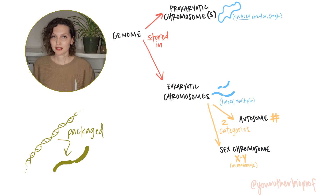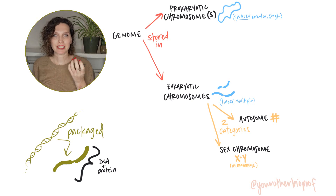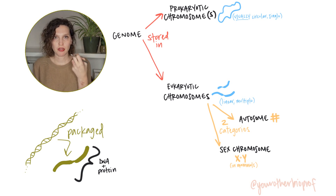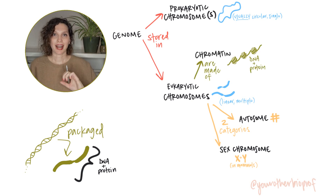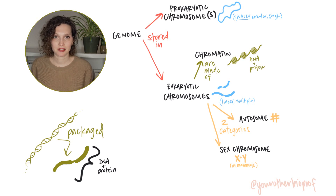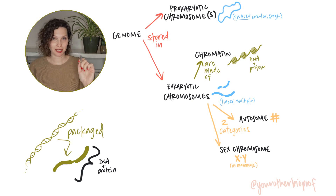In eukaryotic organisms like humans, proteins help to package the chromosomes, keeping the DNA nice and dense so it fits in the nucleus. This is also helpful for controlling when genes are transcribed. We call this combination — this mixture of DNA and protein — chromatin. That '-in' at the end of chromatin may make you think of other protein names, like insulin, or hemoglobin in the blood, or keratin in the skin and nails. So when you see chromatin with the '-in,' remember there are proteins involved.